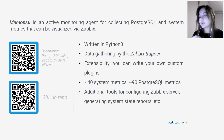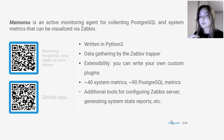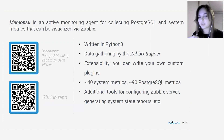It also provides a command line interface for updating some Zabbix server settings. For example, we can create hosts with Mamoncel command line tools, get an overview of the monitoring system configuration, and export some metrics configuration. To learn more about this tool, I recommend a talk called 'Monitoring Postgres using Zabbix' by Daria Wilkova from the previous year's Zabbix monitoring event, and our official documentation on GitHub.